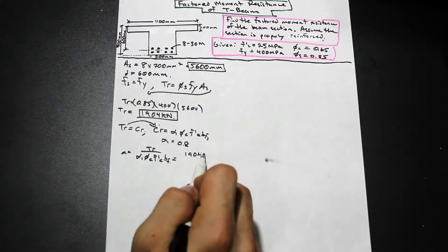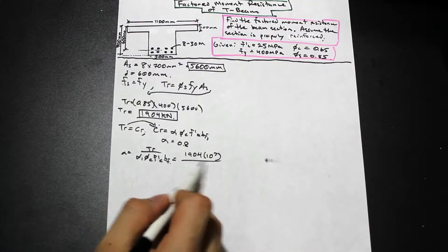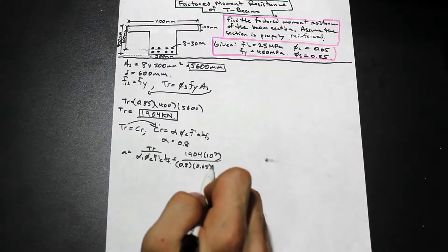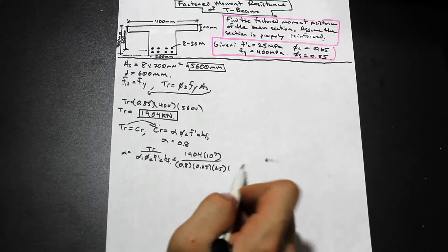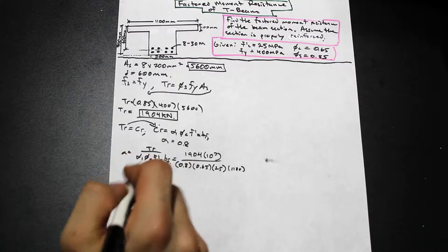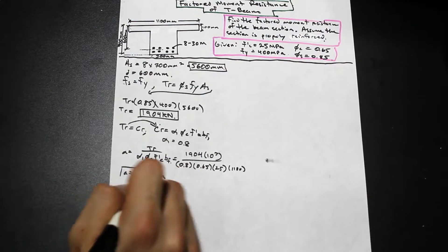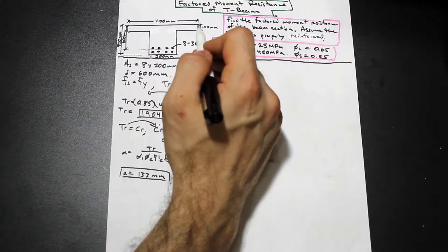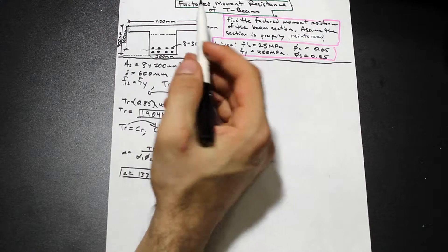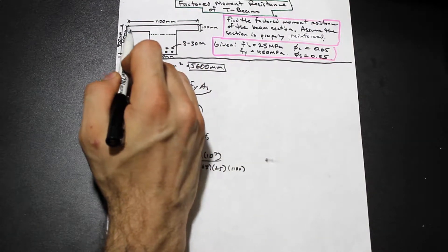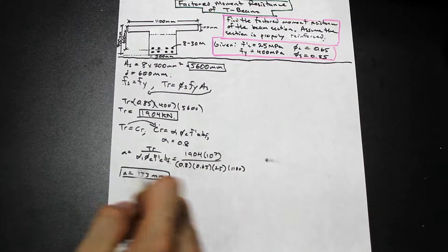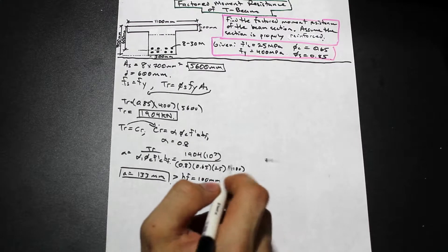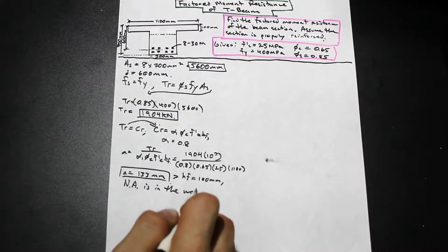Substituting values: a = 1904 × 10³ / (0.8 × 0.65 × 25 × 1100), which gives a = 133 mm. Since hf, the height of the flange, is 100 mm, and a = 133 mm is greater than hf = 100 mm, we confirm that the compressional stress block extends beyond the flange, meaning the neutral axis is in the web.